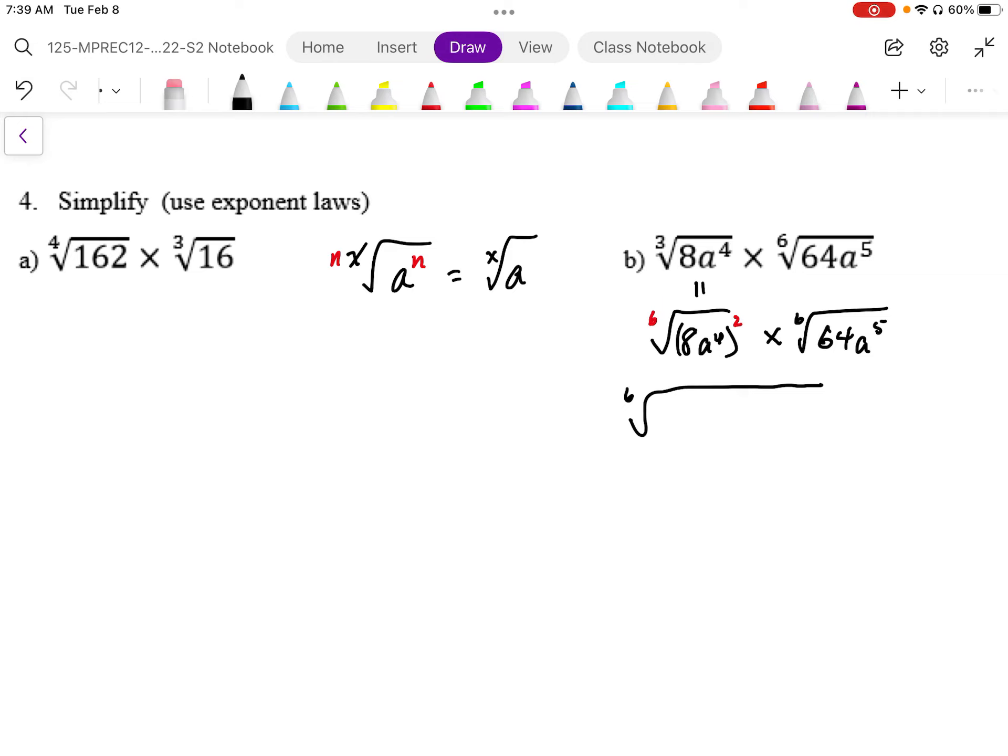So we have index 6. This is going to be 64 times 64. Or I'm just going to leave that as 8 to the power of 4. And this becomes a6 times a5. This becomes a to the power of 11.